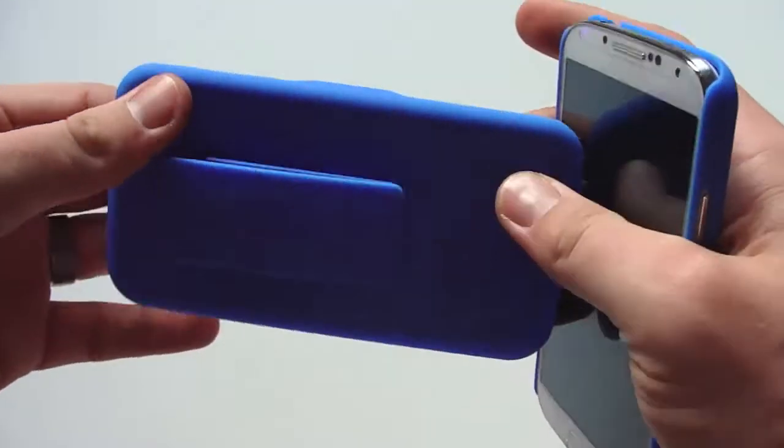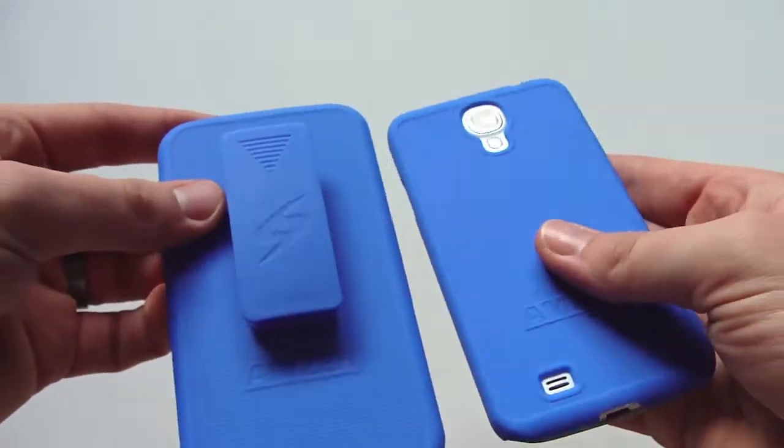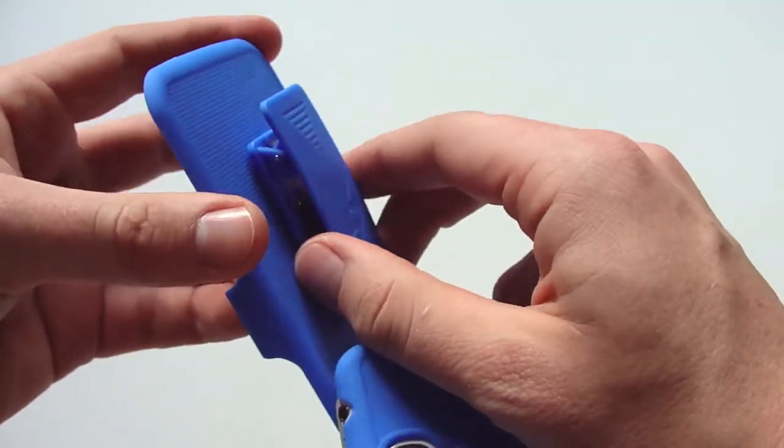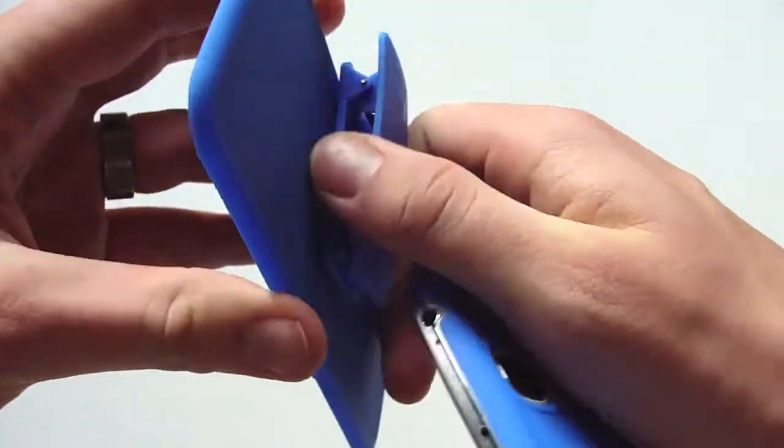The holster is made of the same material. It almost mimics the case itself, except it has a clip on it, of course, and the clip is ratcheting.